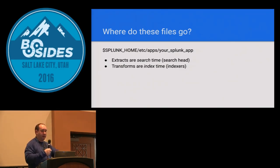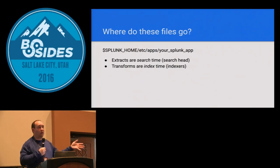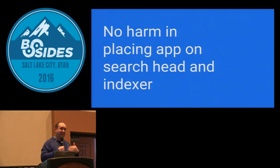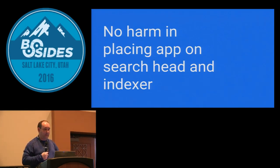Files go in /etc/apps and then whatever you name your app. Extracts are search-time events, so they go on the search head. Transforms are index-time extractions, so they go on the indexers. I only showed one example of index-time transforms — they're rare. But there's no harm in placing them on both, which is what I do. I hate getting into the business of putting search stuff on the search head and index stuff on the indexers separately, because I'll mess up. My deployment server just pushes the app to both and Splunk handles deciphering which one goes where.